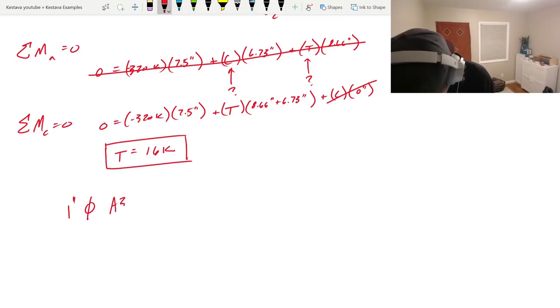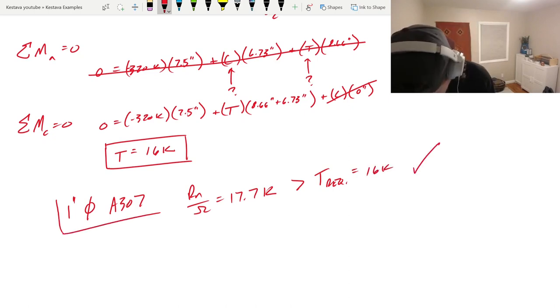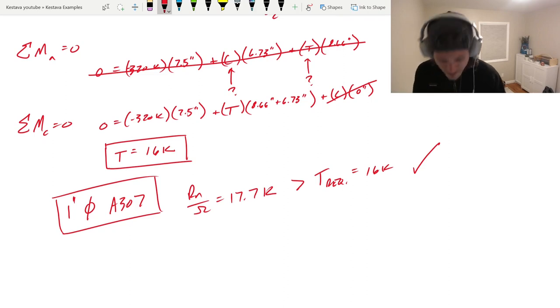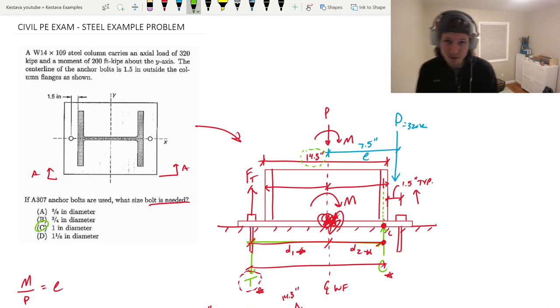One inch diameter, A307, Rn omega equals 17.7 kips, which is greater than T required of 16 kips. So your answer is one inch diameter. Let's head back up to the top. One inch diameter. Correct answers are green circles only. C is going to be our final answer. That's it for today.